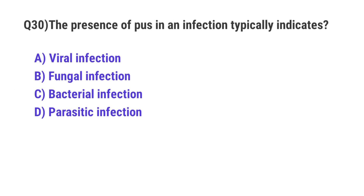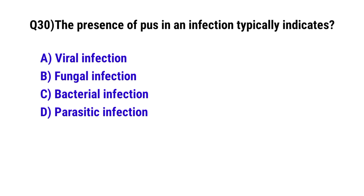Question number 30. The presence of pus in an infection typically indicates. The correct option is C: bacterial infection.